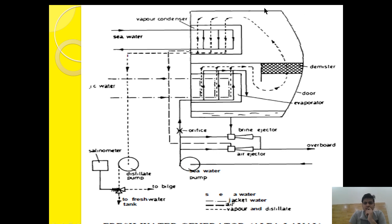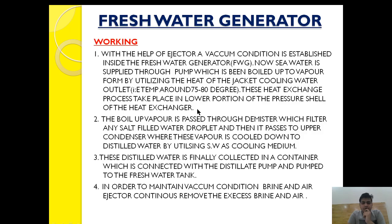This is the cell of the fresh water generator. This is the condenser part, this is the evaporator part, and these are the ejectors — brine ejector and air ejector — and this is the ejector pump, or the sea water pump. The fresh water which is produced is extracted by the distillate pump and it is monitored by a salinometer.